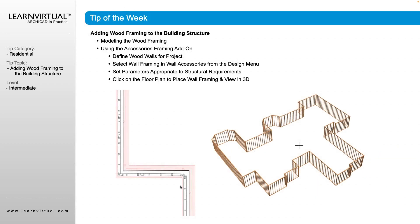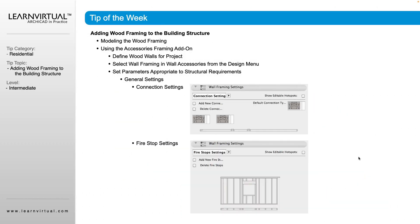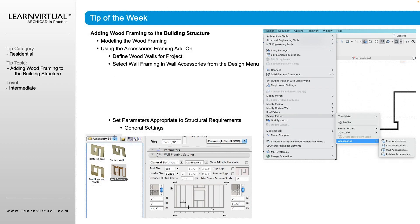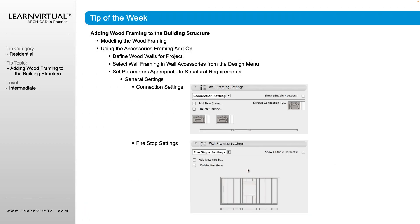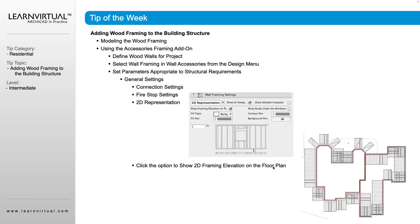Once we have all of those settings configured, simply select any point on the layout. You'll get a little preview to show it, and then your framing is placed. One important note: make sure in the general settings window that the wall framing is set to a structural layer, so it will be turned on and off in the appropriate spots where you need it.